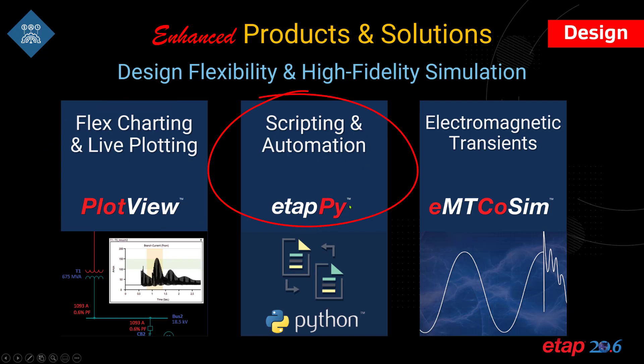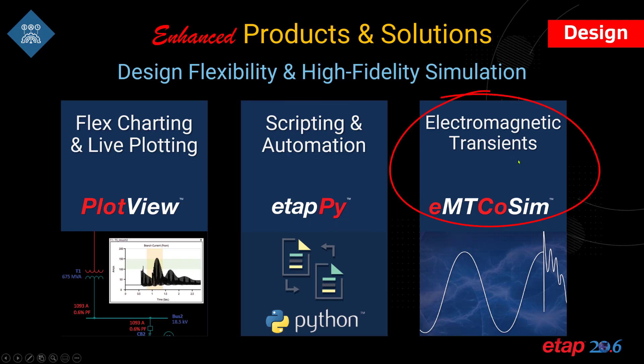Scripting and automation through ETAP PI has been expanded, allowing you to get, set, and even create or delete elements. Electromagnetic transients, or EMT COSIM, is now automated through the study results, allowing you to perform more simulations at the click of a button.